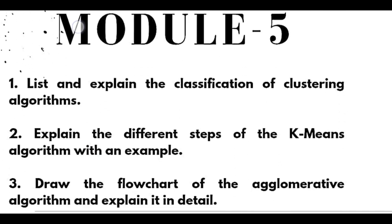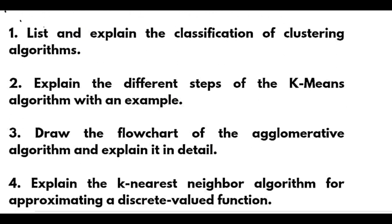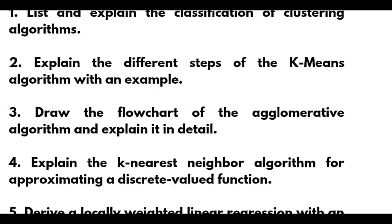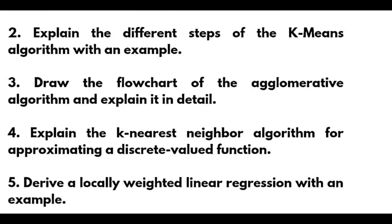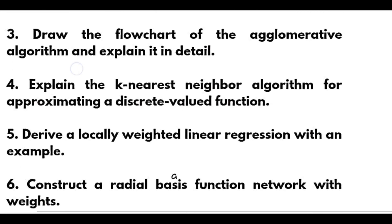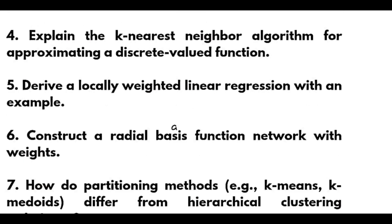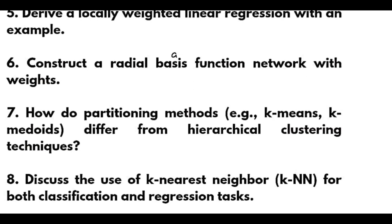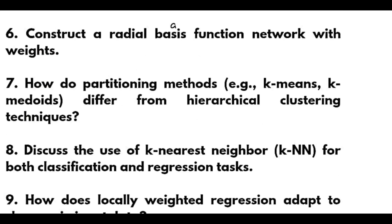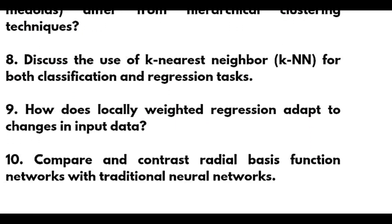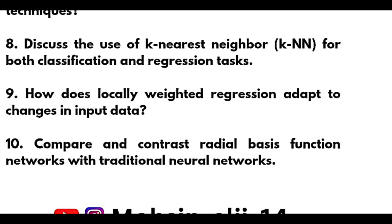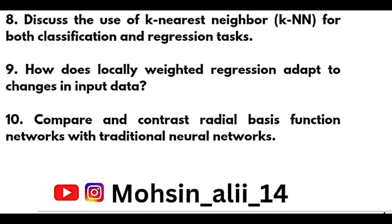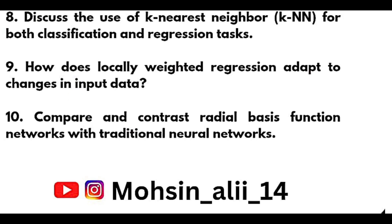Module 5 questions include: list and explain the classification of clustering algorithms; explain the different steps of the K-means algorithm with an example — super important; draw the flowchart of the agglomerative algorithm; explain the K-nearest neighbor algorithm for approximating a discrete-valued function — also super important; derive locally weighted linear regression with an example; construct a radial basis function network; discuss how partitioning methods like K-means and K-medoids differ from hierarchical clustering; discuss K-nearest neighbor for both classification and regression; how does locally weighted regression adapt to changes in input data; and compare radial basis function networks with traditional neural networks.